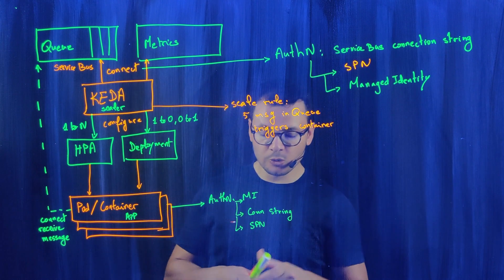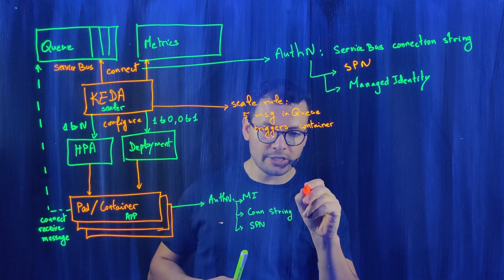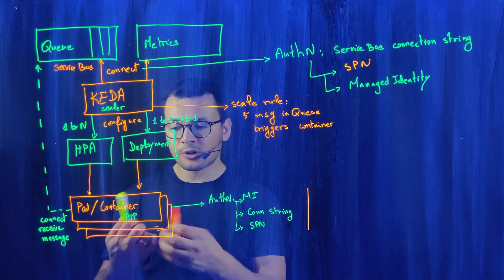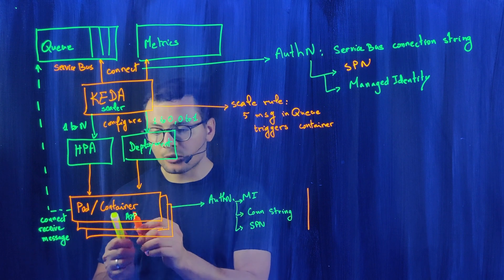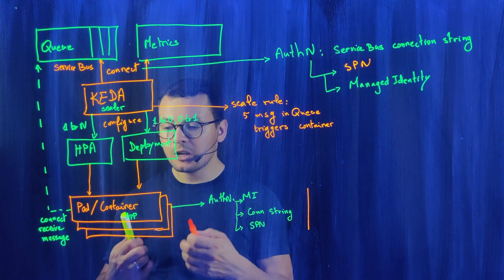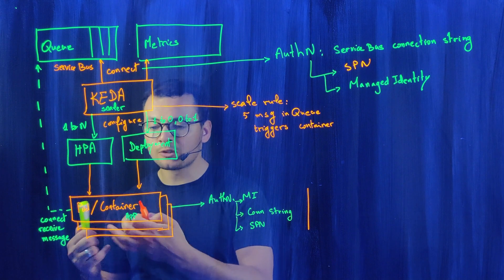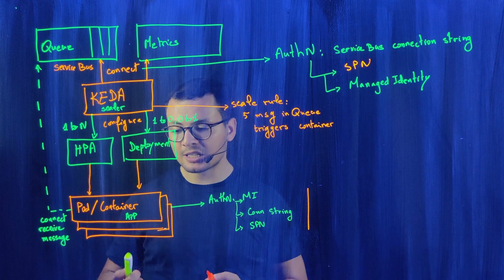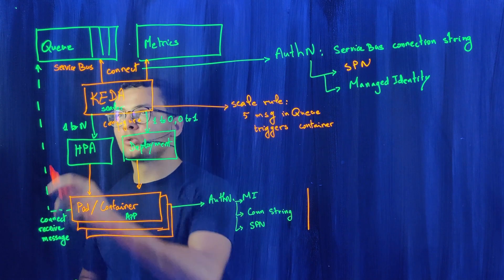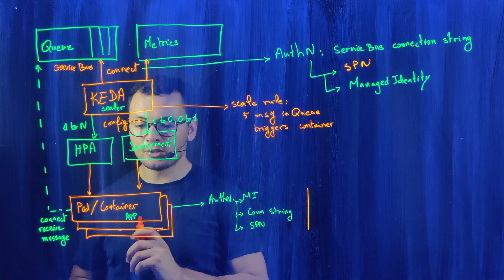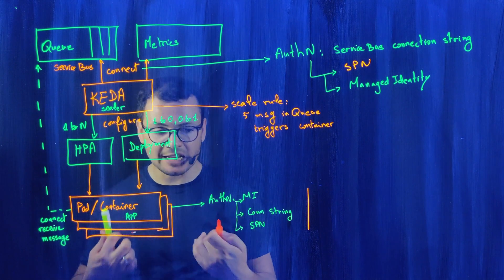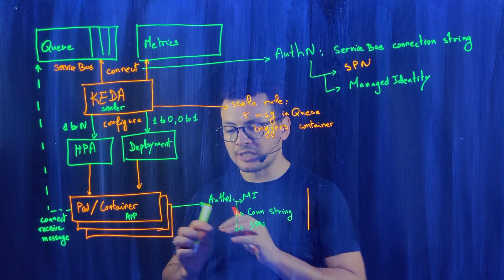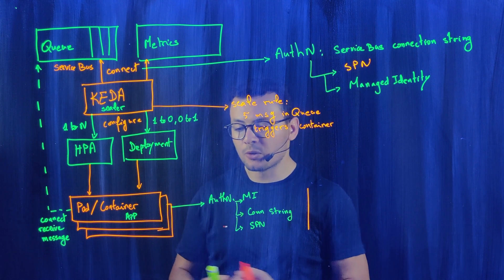But it can also use some other authentication options, because here we're talking about a container. For a developer, he wants to test that container locally in his developer machine before deploying to the Kubernetes cluster or to Container Apps. He wants to make sure that when testing locally, this container could connect to that Service Bus queue to debug it and make sure it works as expected. Once that container or application is running on his own machine, he needs to perform an authentication.